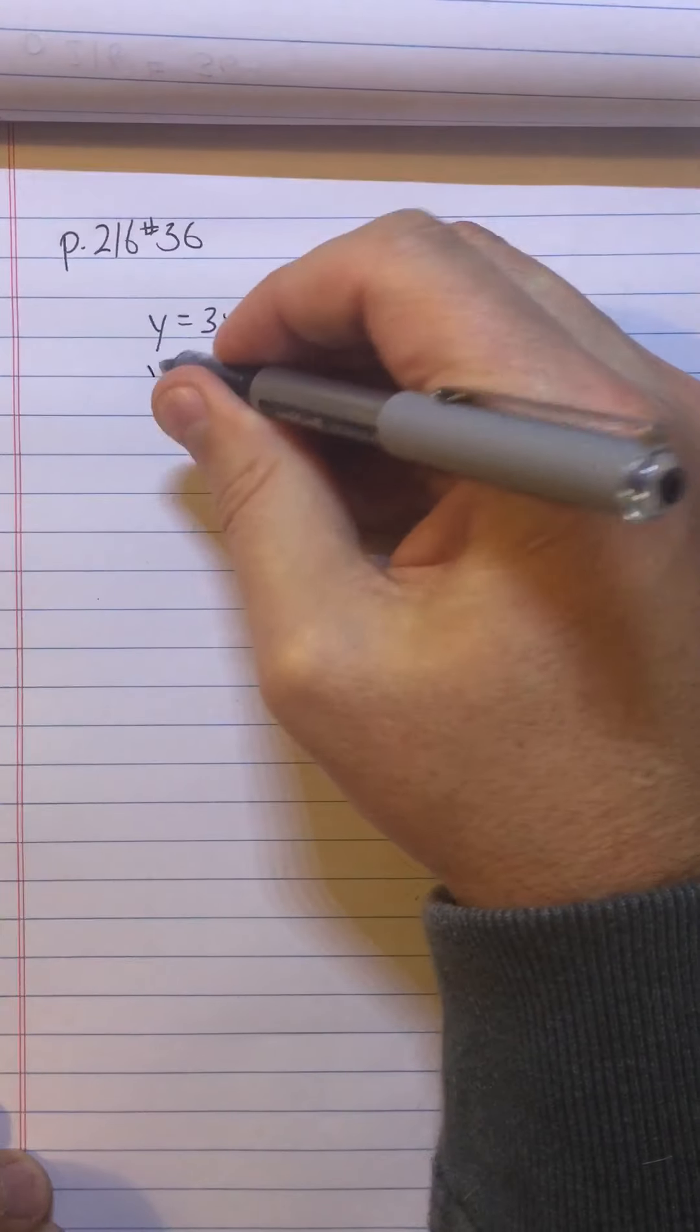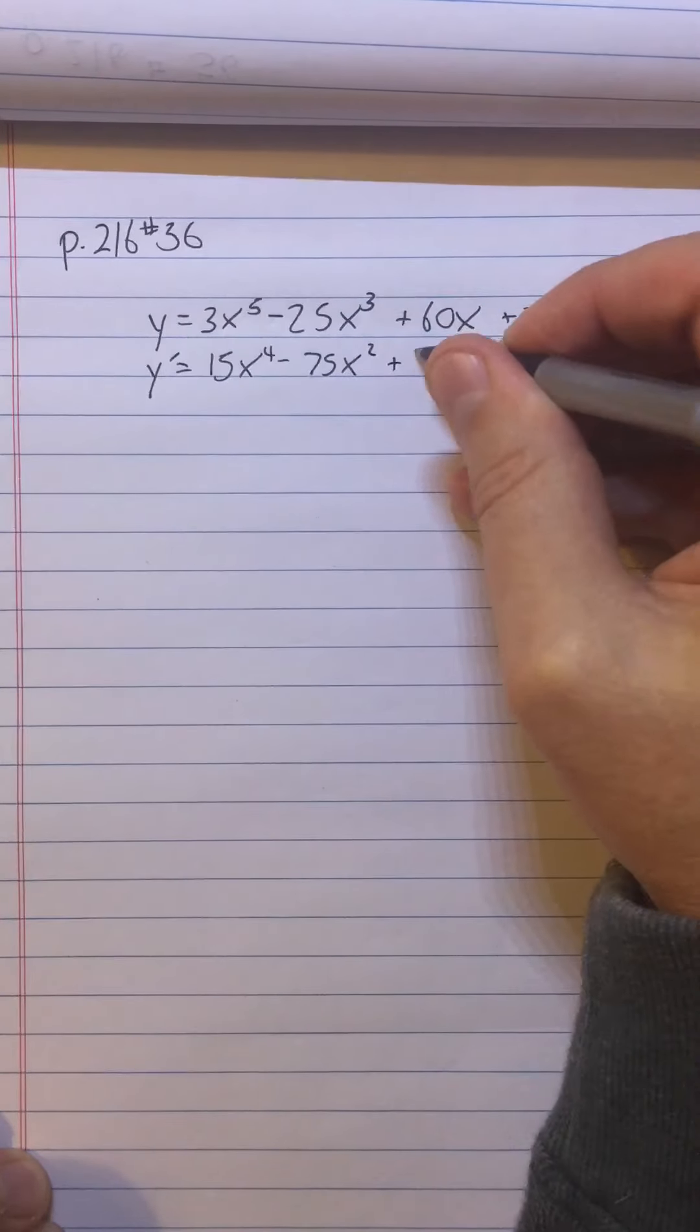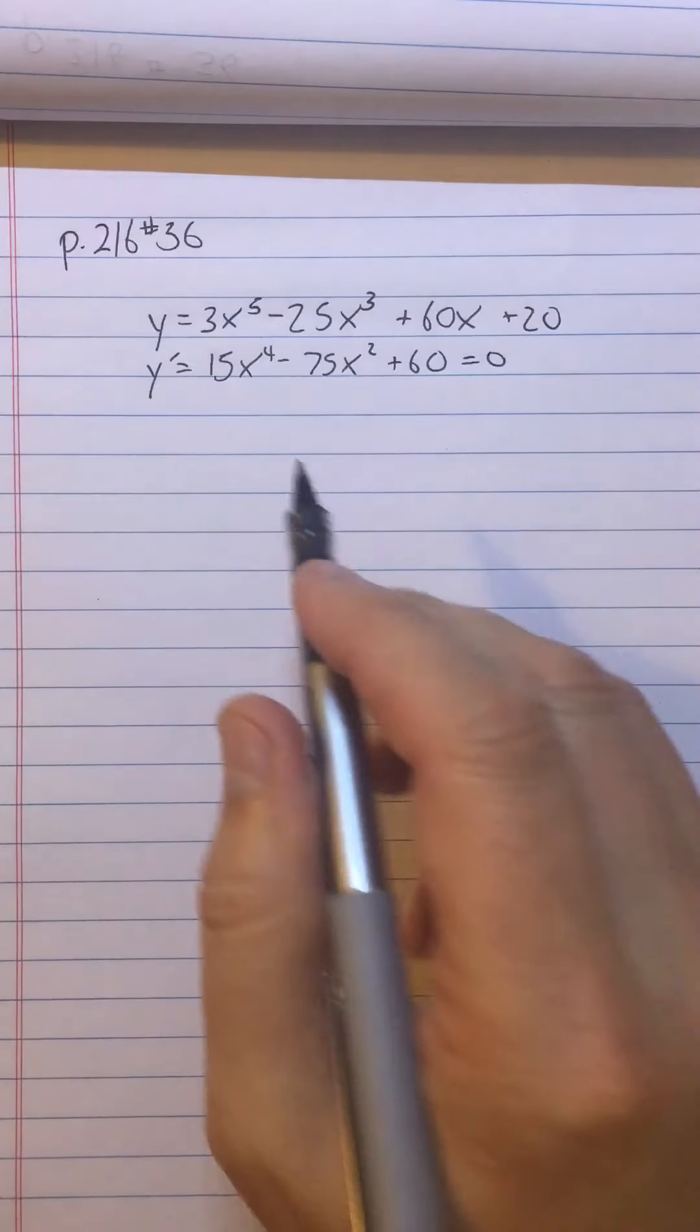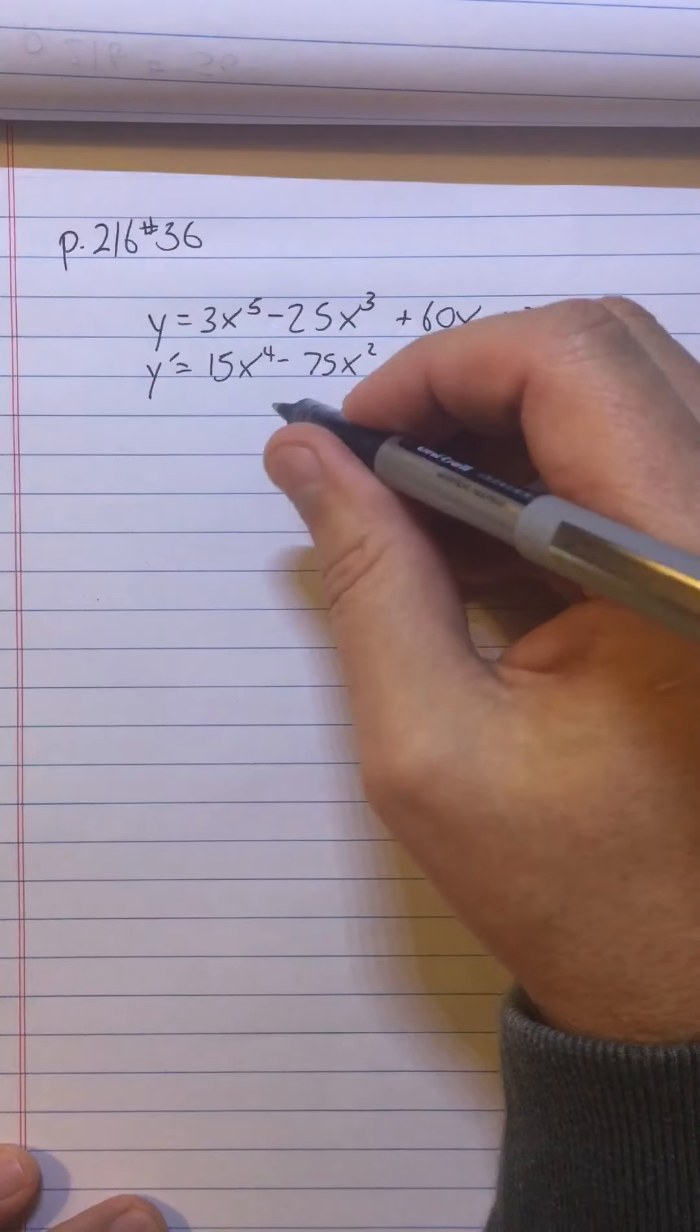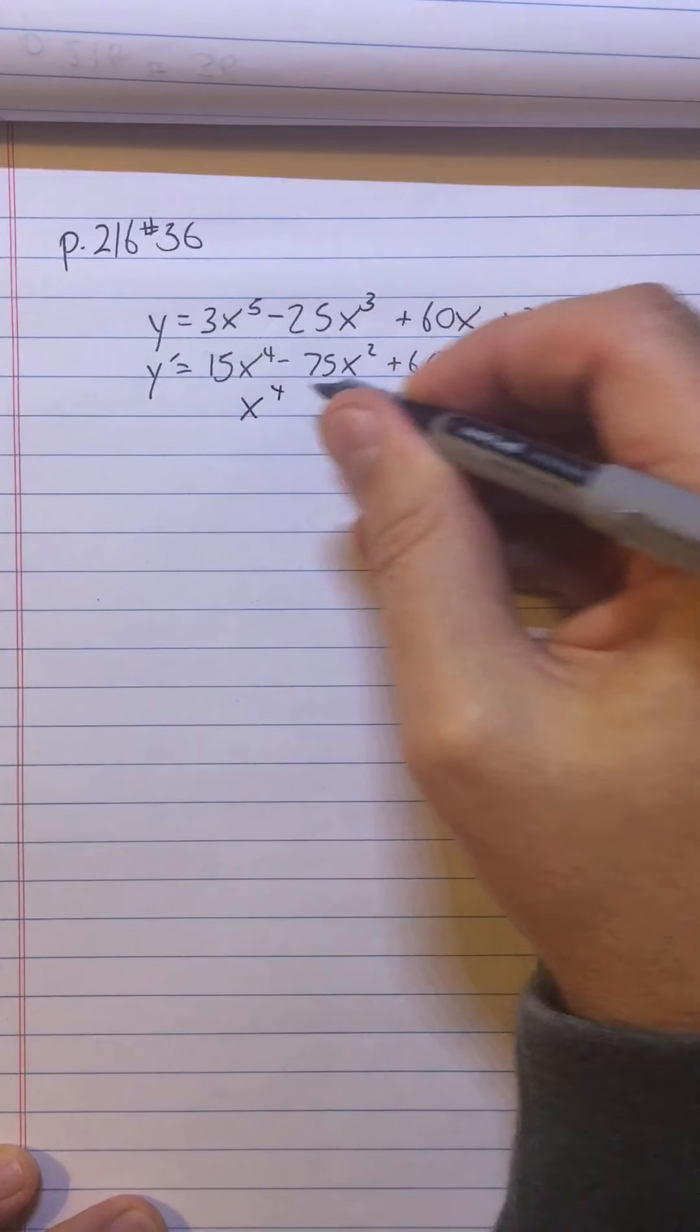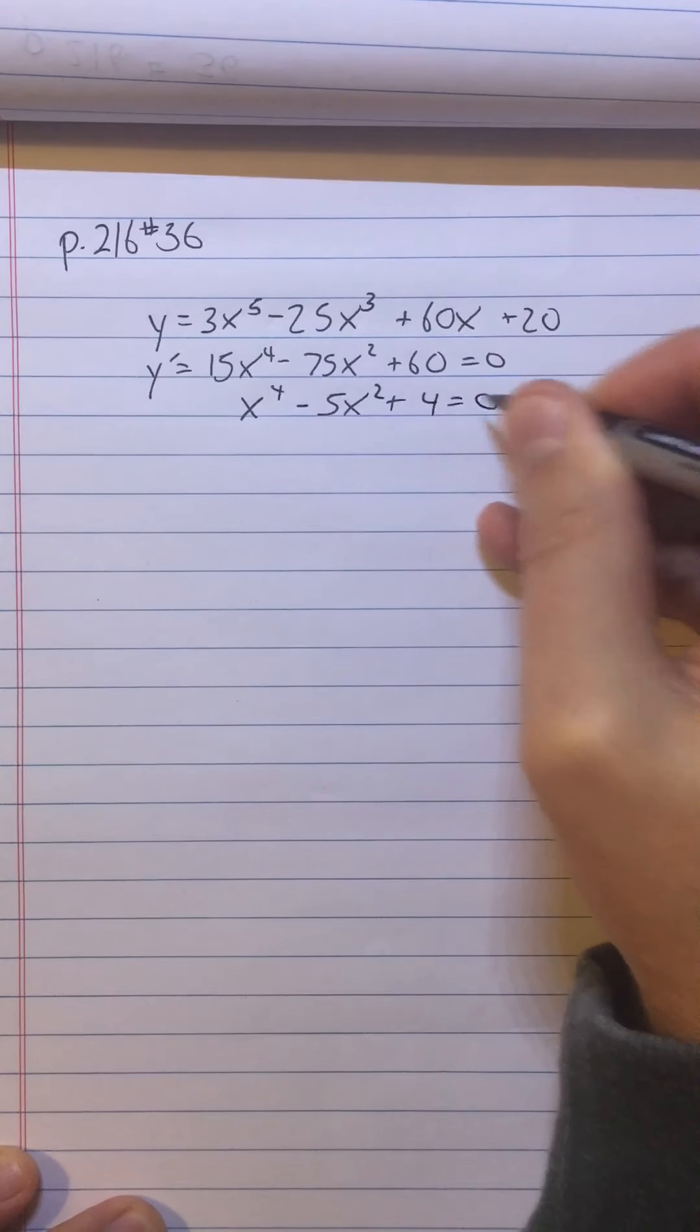So we start by finding the critical points by setting y prime equal to 0. So 15x⁴ - 75x² + 60 = 0. We solve that by factoring. Notice you can factor out a 15 here, so it will be a good idea to do that, and in fact have x⁴ - 5x² + 4 = 0.